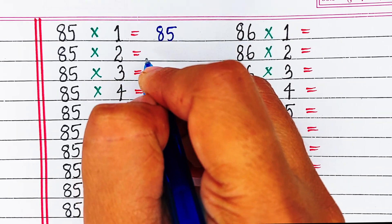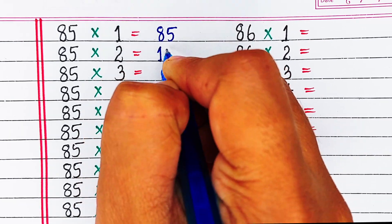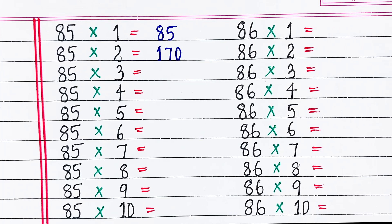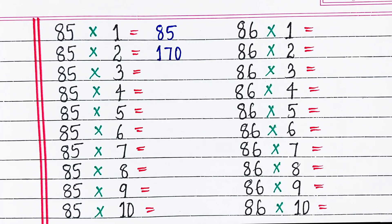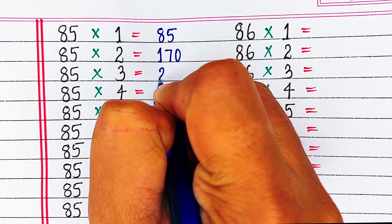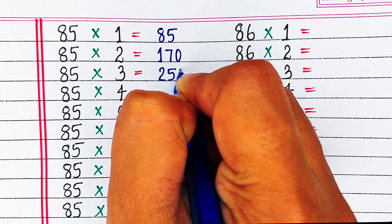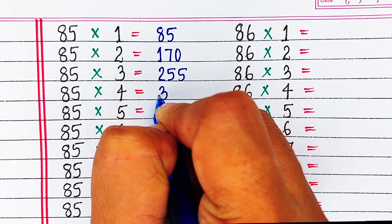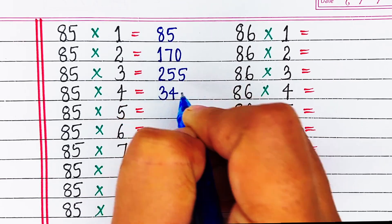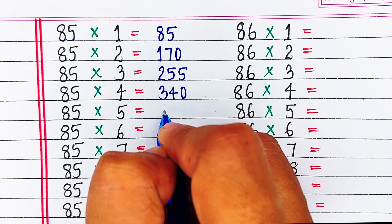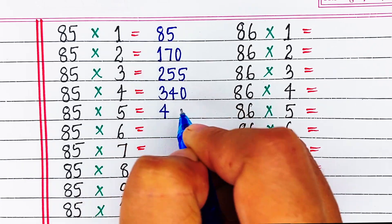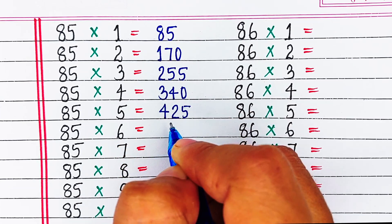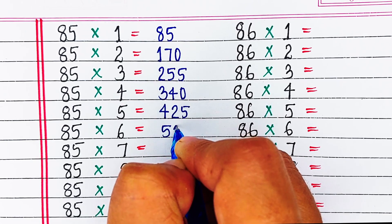Next is table of 85. 85 1s are 85, 85 2s are 170, 85 3s are 255, 85 4s are 340, 85 5s are 425.